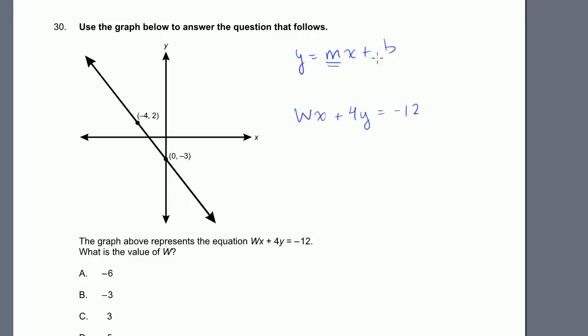If we could just write this line in y equals mx plus b form, maybe if we just figure out the slope of the line, that'll be enough. They said the line is wx plus 4y equals minus 12. I just want to put it into the standard mx plus b form. If we subtract wx from both sides, we get 4y equals minus wx minus 12. Then divide both sides by 4. You get y equals minus w over 4 times x minus 3. This is the equation of the line. Minus w over 4 is the slope of the line.